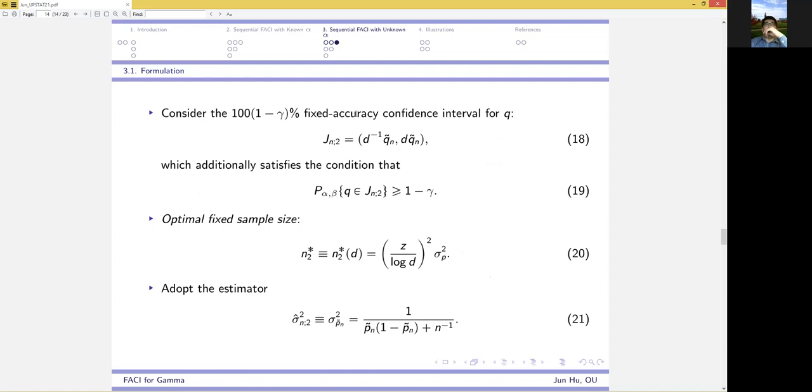Now, we consider the fixed accuracy confidence interval and obtain the optimal fixed sample size, which remains unknown. We adopt the estimator of sigma p squared by 1 over p n tilde times 1 minus p n tilde plus m to the power negative 1. We incorporate this term so that the estimator is always well defined, because otherwise the denominator has a positive probability to be 0.